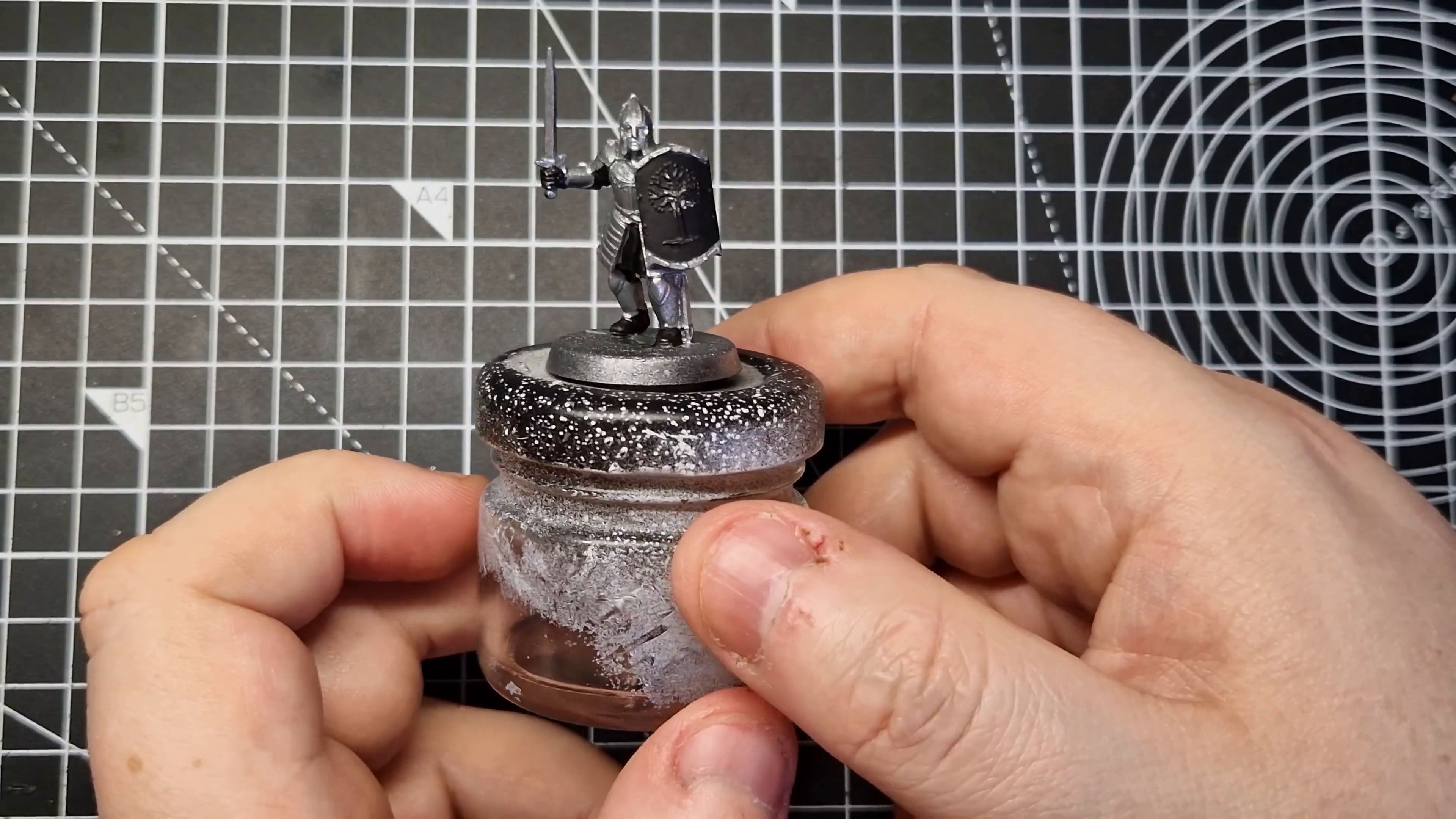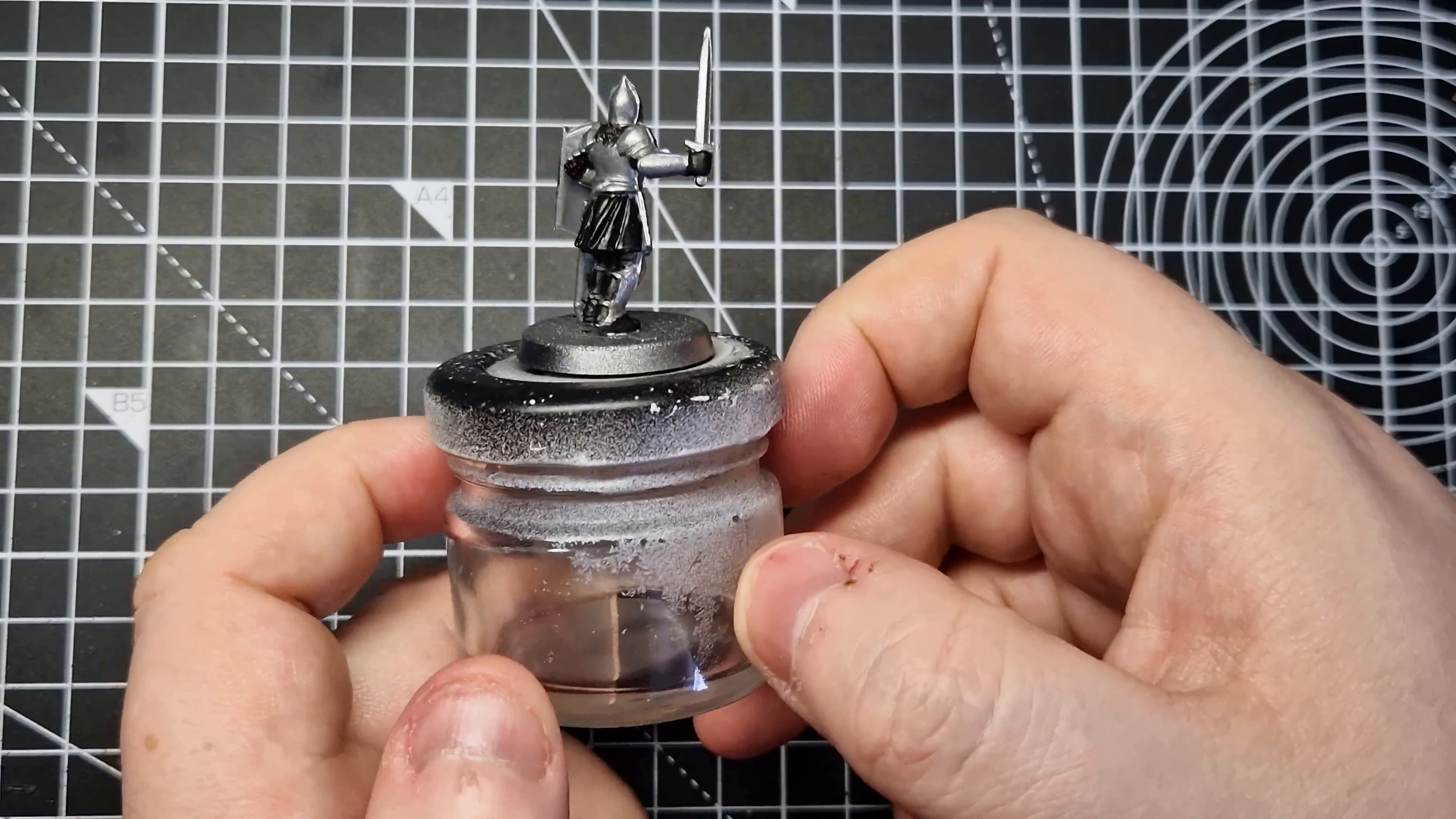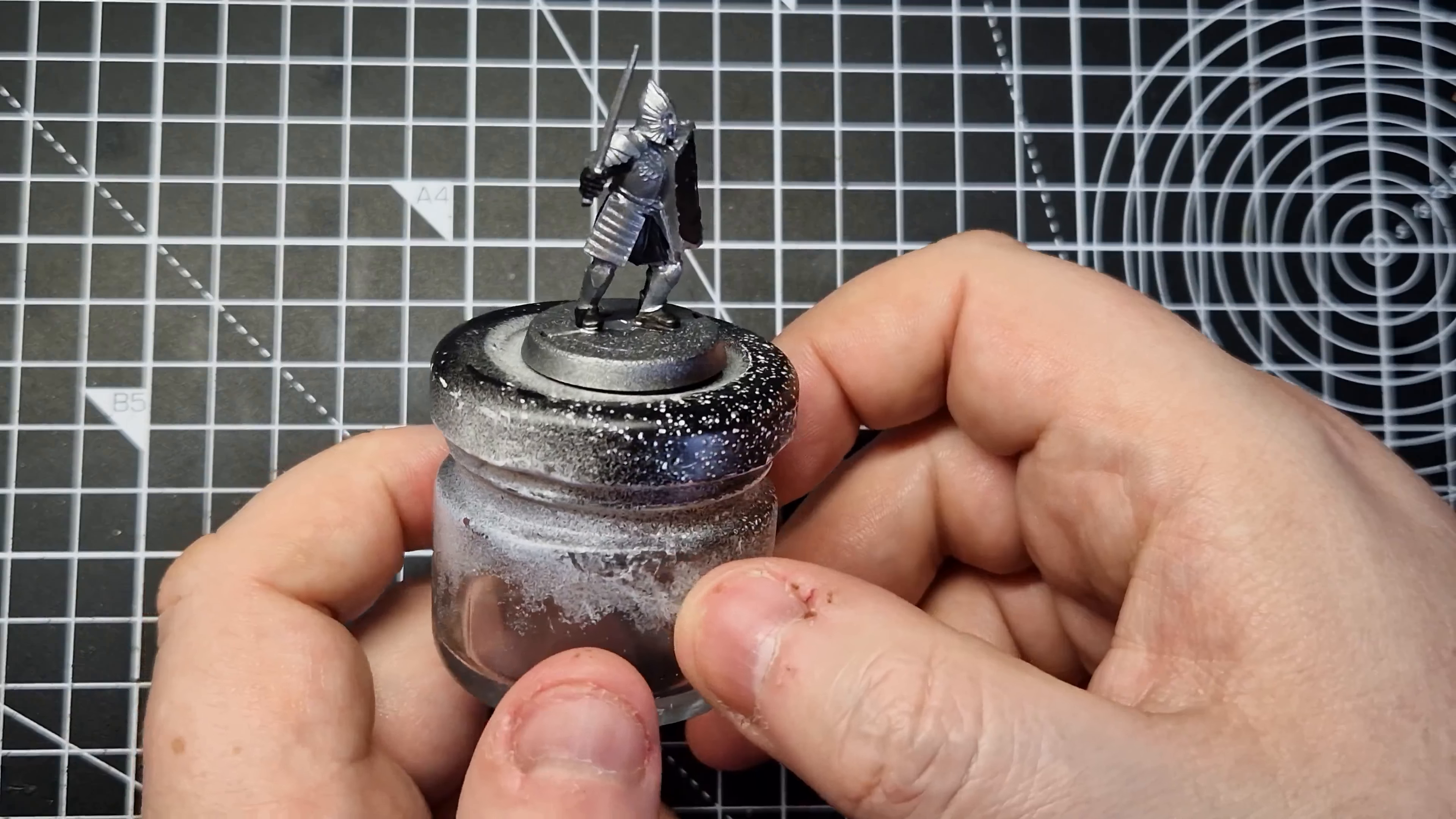And once you're finished, it should look like this. Solid black on top of the silver, you shouldn't see any of the silver underneath. Like I said, take your time, get some thin coats down.